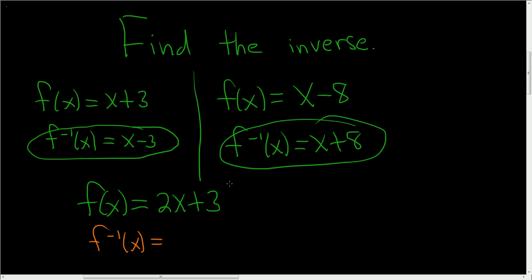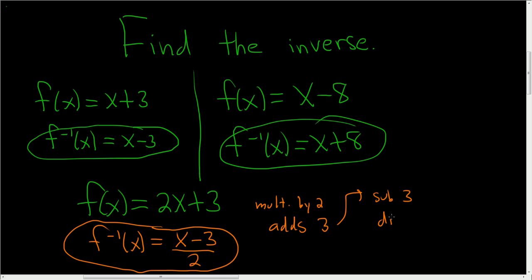It's taking x, multiplying it by 2, and then adding 3. So first, we have to undo the addition. Instead of adding 3, we'll subtract 3, and instead of multiplying by 2, we'll divide by 2. Now if you can't think of all of that in your head, write it down. What does f do? It multiplies x by 2, and then adds 3. So to undo that, you have to go in reverse order. Instead of adding 3, you subtract 3, and then divide by 2. That's exactly what we did. We first subtracted 3, and then divided by 2.